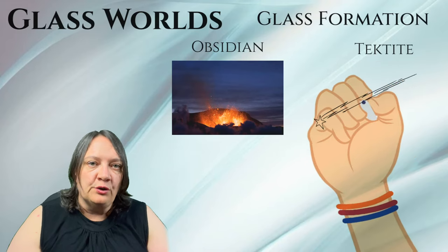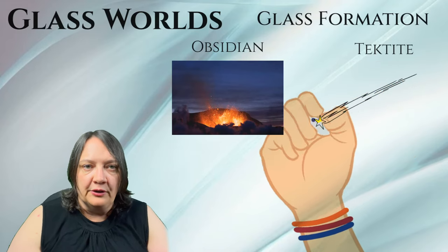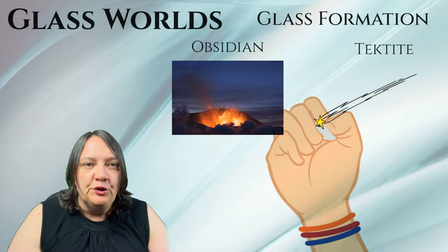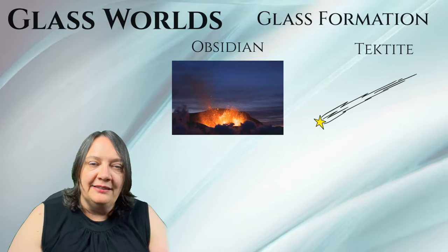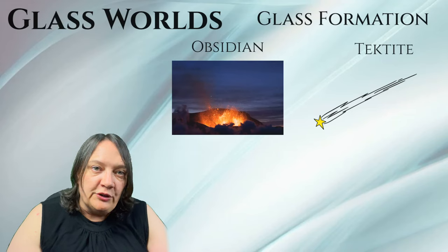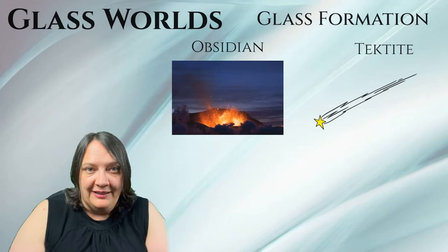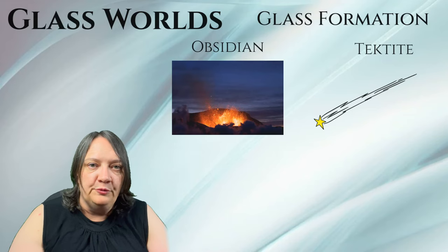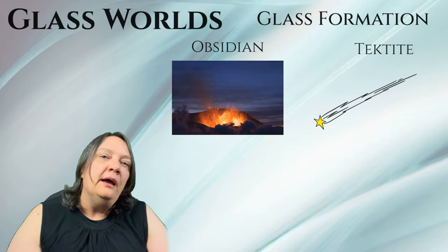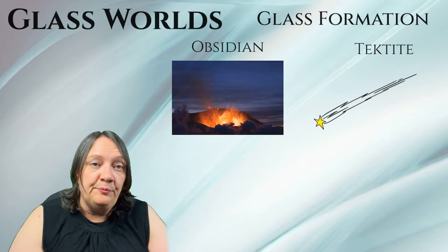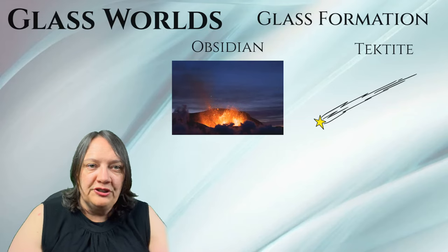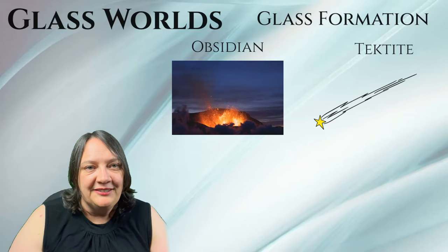This causes the surrounding terrestrial material — mainly rocks and soil — to melt and be ejected into the atmosphere. The molten material then cools rapidly as it travels through the air, solidifying into glassy objects before falling back to the earth. Due to the high-speed formation and cooling, tektites have an amorphous structure like glass.